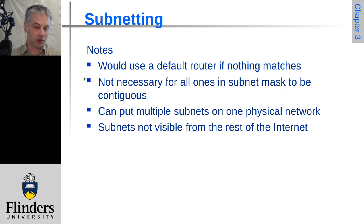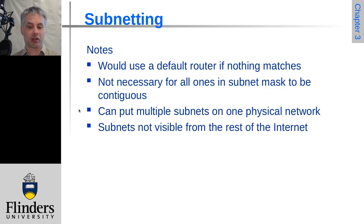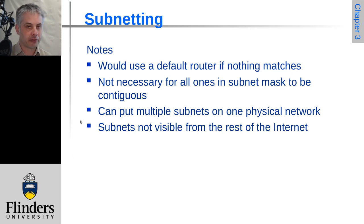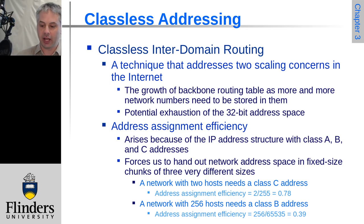If there's no other option, you use the default route — that's what default router means. You don't have to have all the ones in the subnet mask be contiguous, because it's just doing a binary AND — you could do weird things with zeros higher up in the mask. Most network stacks will let you do that. You can also have multiple subnets on one physical network; each of those subnets will not be visible to each other — they'd need a router between them, but that router could have just one interface to reach them. Finally, the existence of the subnets is not visible from the rest of the internet, which will still route to the class A, B, or C network. This is the traditional way IPv4 addressing and routing was done, as opposed to classless addressing which is how it largely works now.